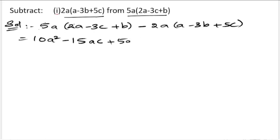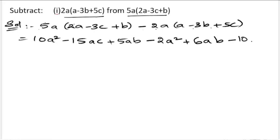Next, minus 2a into a: minus into plus gives minus 2a². Minus into minus is plus, 2 threes are 6, so plus 6ab. Minus into plus is minus, 2 fives are 10, so minus 10ac. Now we compare: 10a² and minus 2a².